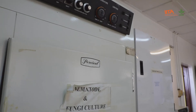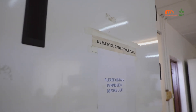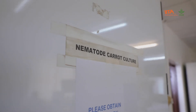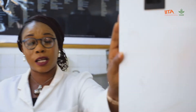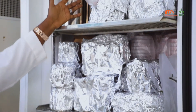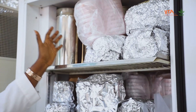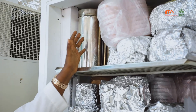The first piece of equipment we call the incubator. Remember, nematodes are microscopic in nature, which means you can culture them in the laboratory if you don't want to culture them in the screen house. Let me open it so you can see some of the nematology work going on here. These are plates, and inside the plates we have carrots — we use carrots to multiply our nematodes.